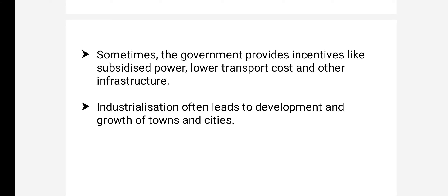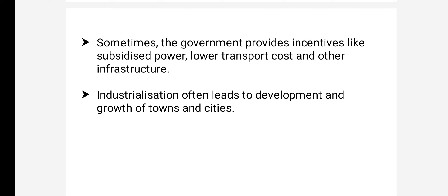Industrialization often leads to the development and growth of towns and cities. Industries may be established in rural areas, but as soon as an industry is established there, urbanization follows — people start working in that area, and slowly hotels, transportation, banking, everything develops. That rural area ultimately turns into a town, and towns turn into cities. So these are the most important factors affecting the location of industry.